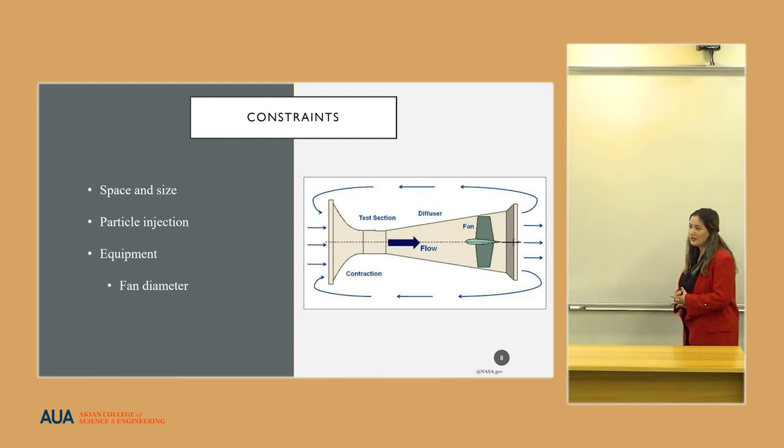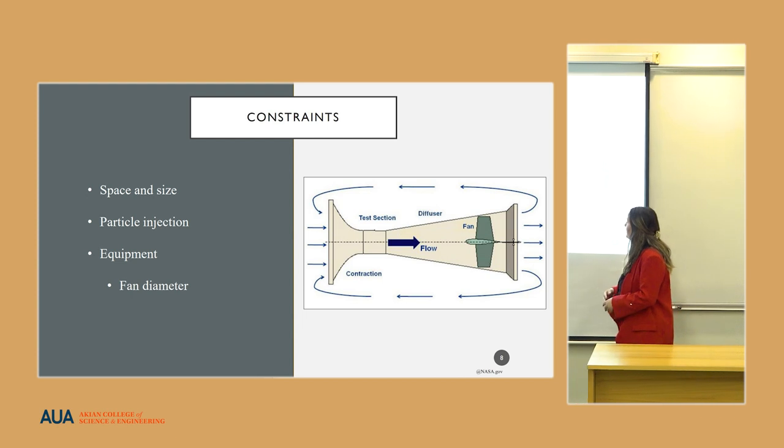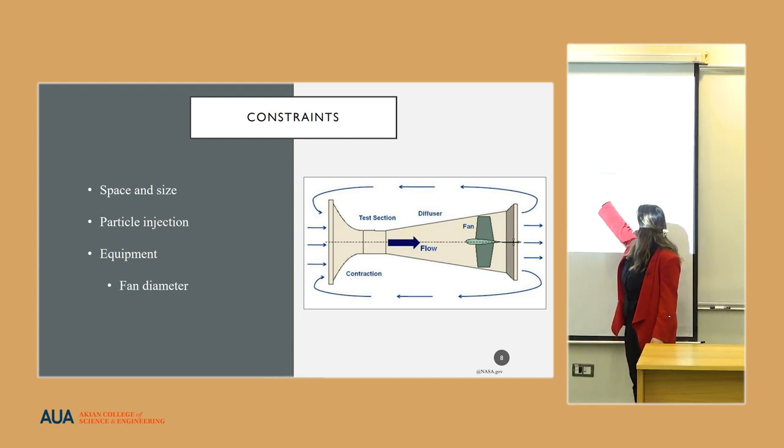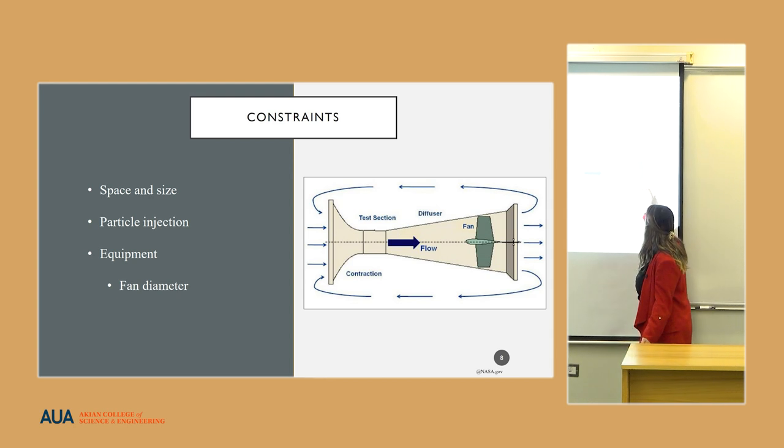Let's first understand what are the main parts of the wind tunnel. First, we have the contraction section, and then the test section where the object is being tested, the diffuser, and the fan.